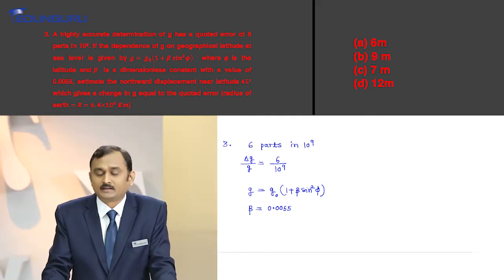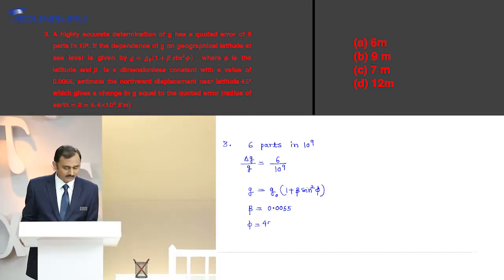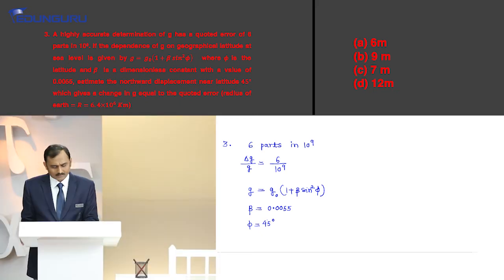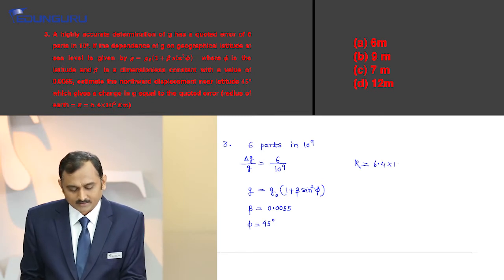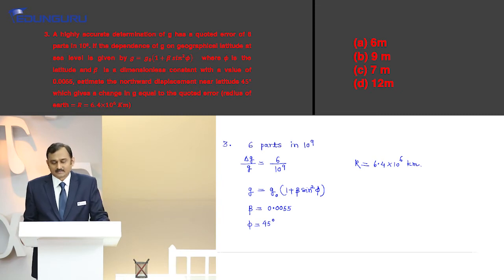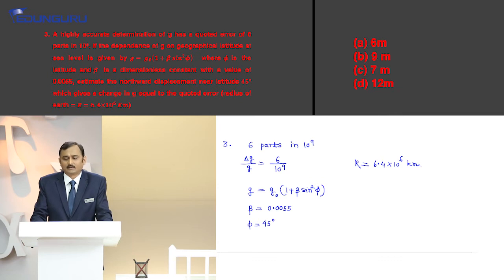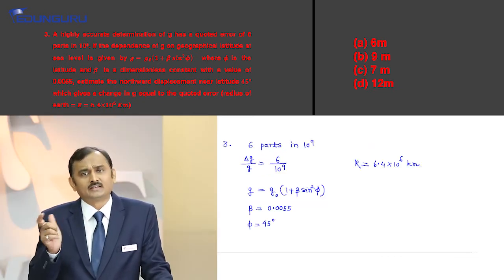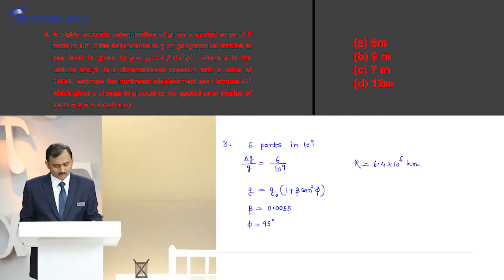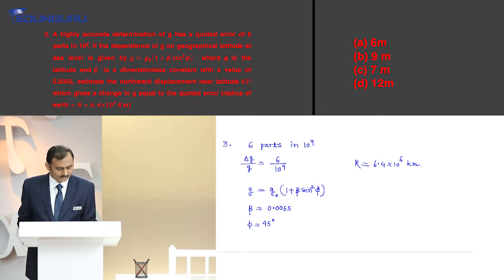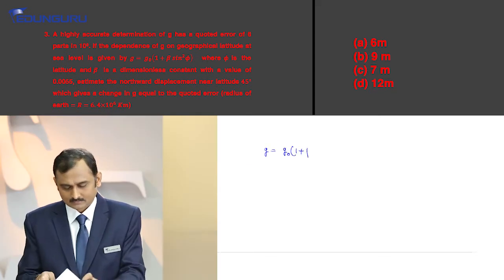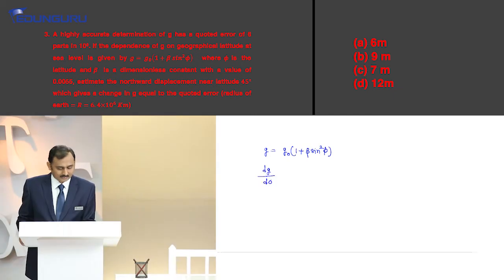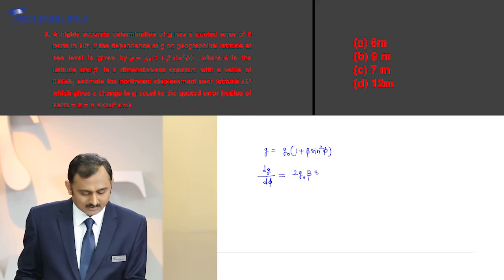We have to estimate the northward displacement near latitude 45° which gives a change in G equal to the quoted error, where radius of the earth R = 6.4 × 10⁶ m. The options are: A — 6 m, B — 9 m, C — 7 m, D — 12 m. The northward displacement is R × dφ. Differentiating G = G₀(1 + β sin²φ), we get dG/dφ = 2G₀β sinφ cosφ.